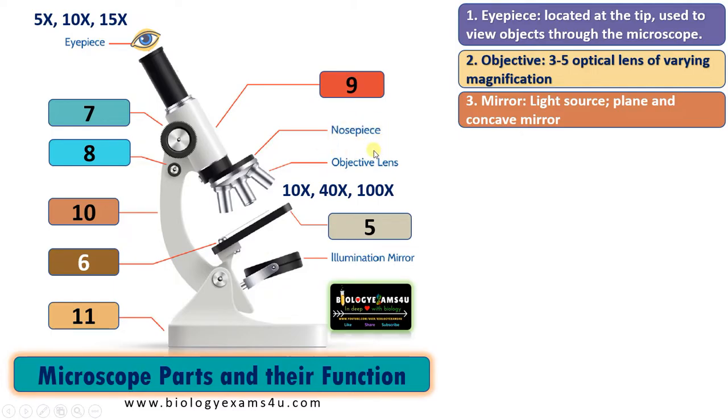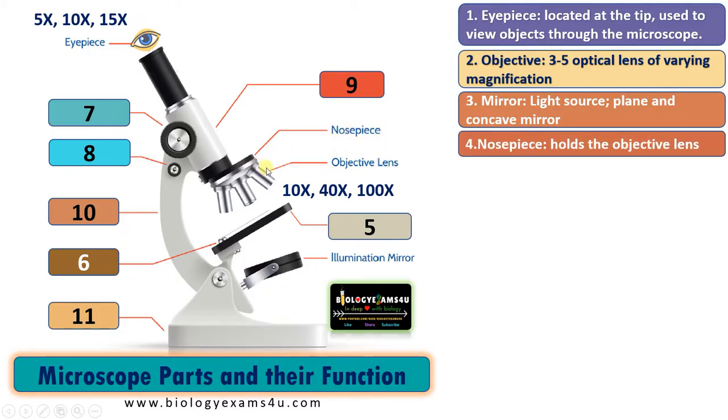The next part is the nosepiece. As you can see, the nosepiece holds the objective lenses and can be rotated. It holds the low power, middle power, and high power objectives.